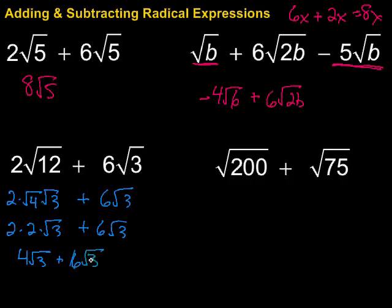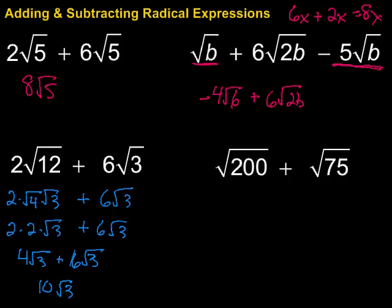Now we do have the same radicand and we can combine those. We've got 4 square roots of 3 plus 6 square roots of 3, for a total of 10 square roots of 3.